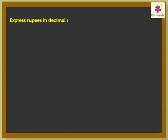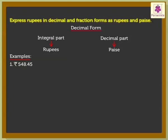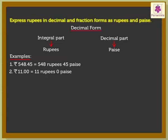Next, let's express rupees in decimal form and in fraction form as rupees and paise. We know that for rupees in decimal form, the integral part is rupees and the decimal part is paise. Therefore, rupees 548.45 is the same as 548 rupees and 45 paise, and rupees 11.00 is the same as 11 rupees and 0 paise.